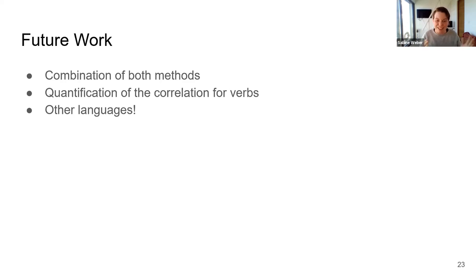So if any of you have some ideas, I'm very curious about that. Another thing that I would love to work on but that didn't happen is really do human experiments where we quantify the correlation for verbs in a way similar to Geffet and Dagan did for nouns. And last but not least, other languages.